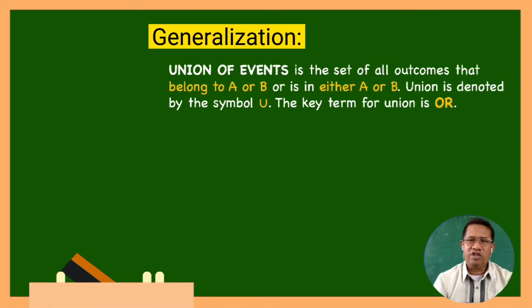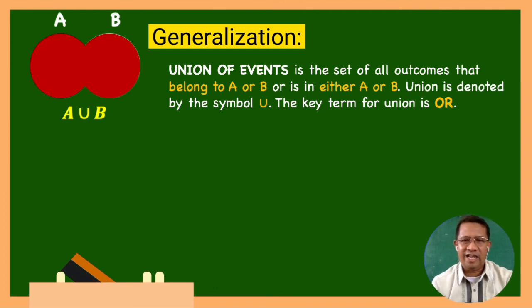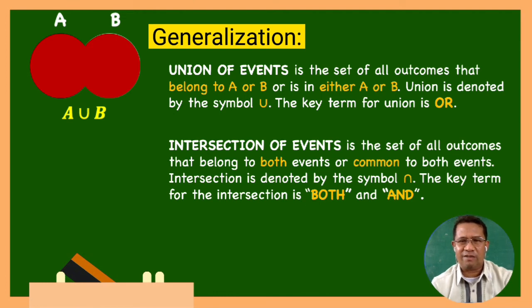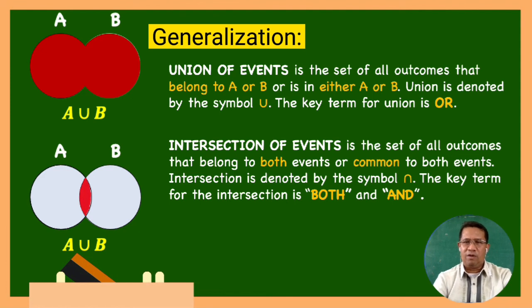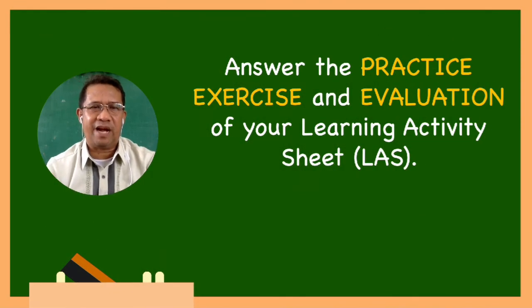As a summary: the union of events is the set of all outcomes that belong to A or B, or is in either A or B. Union is denoted by the symbol U. The key term for union is 'or' and 'all'. While the intersection of events is the set of all outcomes that belong to both events or common to both events. Intersection is denoted by the inverted U symbol. The key terms for intersection are 'both' and 'and'. Good luck on your practice exercise and evaluation in your learning activity sheet.